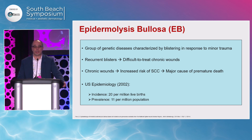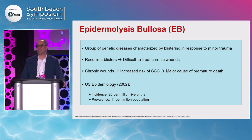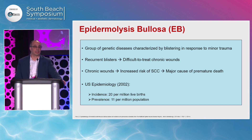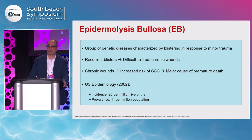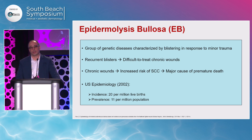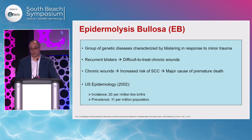Epidermolysis bullosa, or EB, is a group of genetic disorders characterized by recurrent blistering in response to minor trauma. There's a defect in those structural proteins, and the recurrent blistering oftentimes leads to difficult-to-treat, very painful chronic wounds. Long-standing chronic wounds increase the risk of squamous cell carcinoma, which is the major cause of death in EB patients, along with sepsis. It's a very rare disease — the incidence is 20 per million live births and the prevalence is 11 per million population. However, these patients suffer a lot — it's very painful, wounds are very complex, notoriously difficult to treat, and there's a huge unmet need.